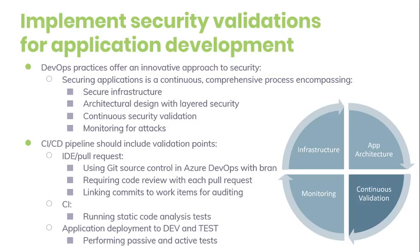Organizations should have continuous security validation at each step to help ensure the application is always secure. This shifts the conversation with the security team from approving each release to approving the CI/CD process and having the ability to monitor and audit the process at any time. The diagram presented on this slide highlights the key validation points in the CI/CD for a greenfield application. Depending on your platform and where your application is at in its life cycle, you might need to consider implementing tools regularly.